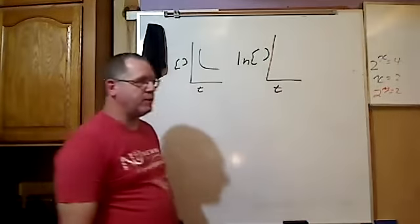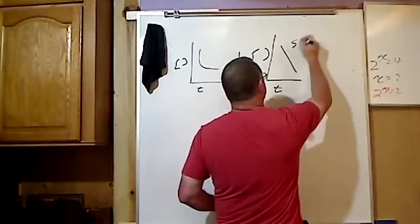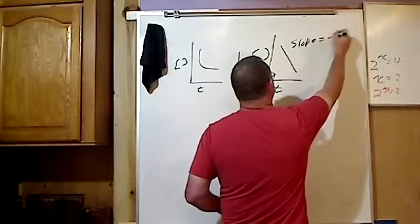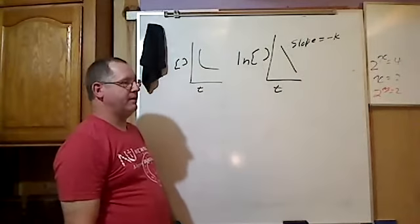If the natural logarithm of concentration versus time is a straight line, let's say this particular one is a straight line, then the slope would be equal to negative k.